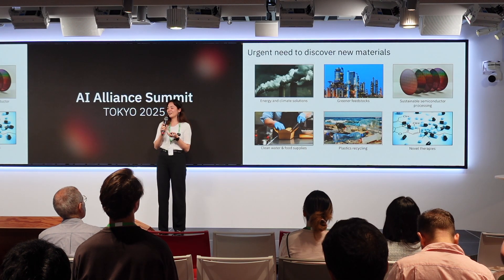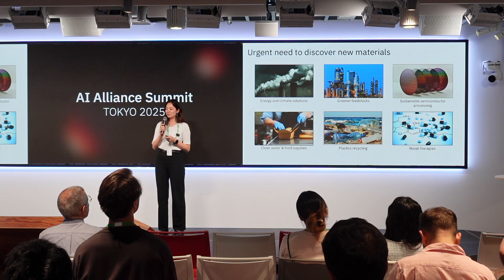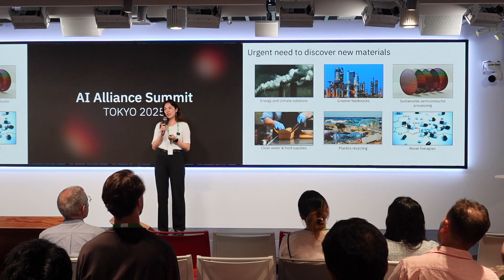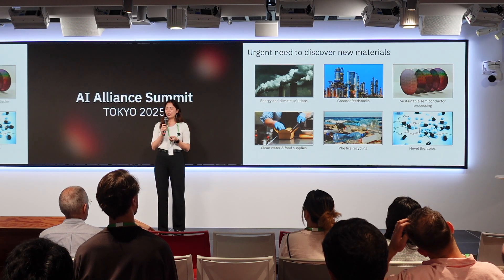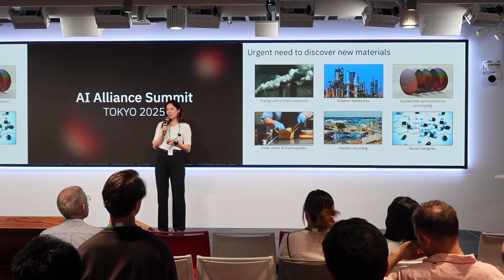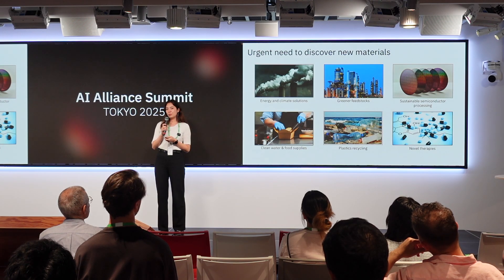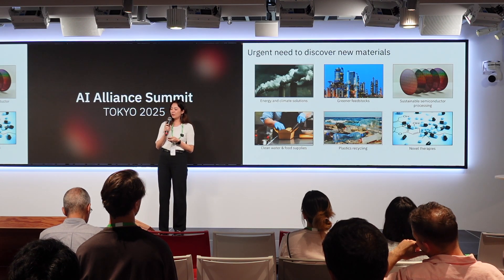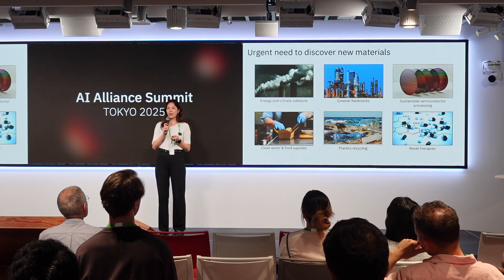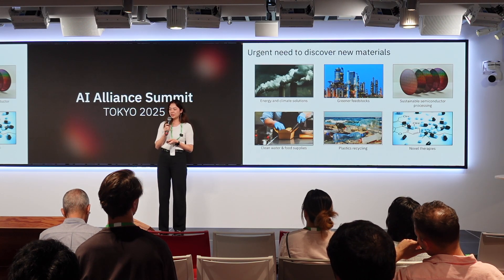Why is IBM even doing materials-related research? IBM has a very strong background in material and chemistry related research, especially in the semiconductors and polymers domain. With the AI capabilities at IBM, we are trying to develop AI-driven solutions that help accelerate the discovery of new materials.